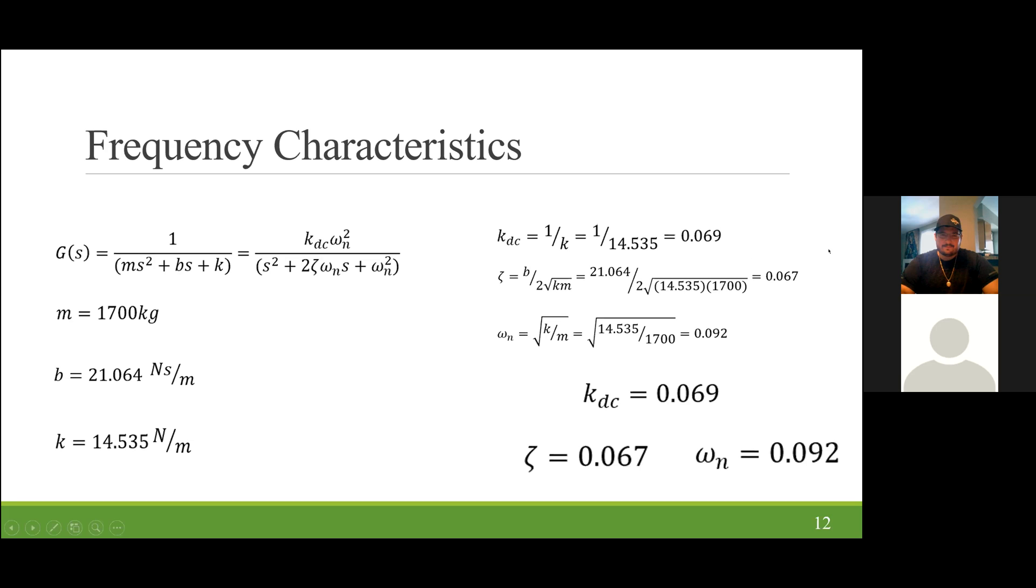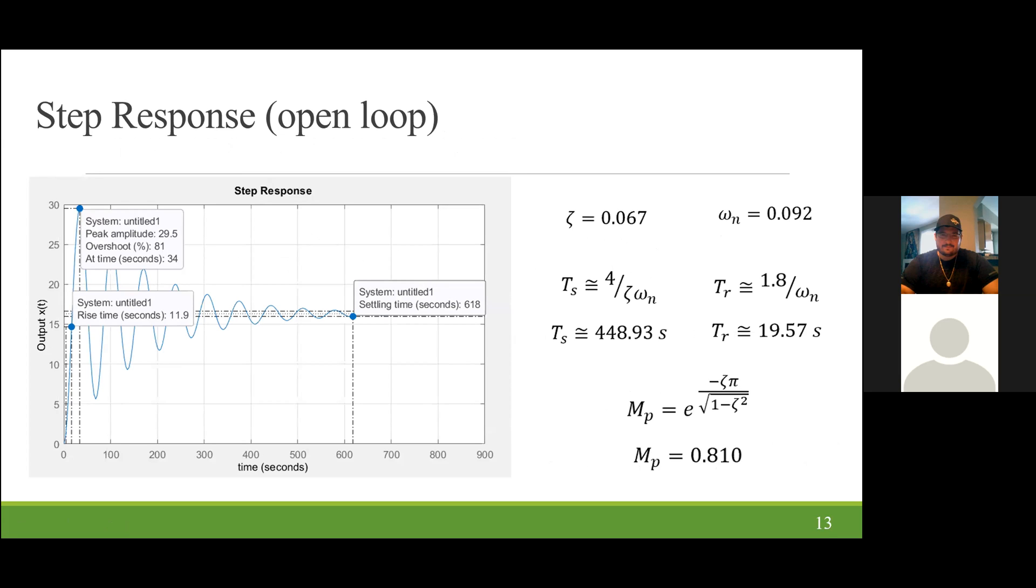Using our frequency characteristics, we can approximate our open-loop step response. The settling time can be approximated using the equation 4 over zeta natural frequency, which approximates a settling time of 448.93 seconds. We can also estimate our rise time, which is 1.8 over the natural frequency. We estimated a rise time of 19.57 seconds. We can also estimate our maximum overshoot. This is supplied by the equation e to the negative zeta pi over the square root of 1 minus zeta squared. Plugging this in, we get a maximum overshoot of 81%. Our values are a bit off from the graph as labeled, but they are approximations in themselves.